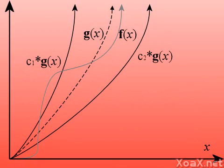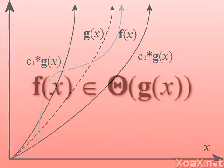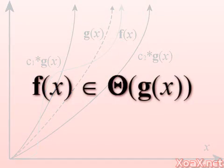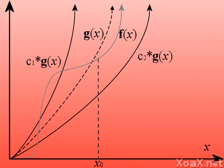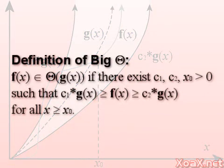If there are constants such that g(x) bounds the function f(x) both from below and above, then we say that f(x) is in Big Theta of g(x). Of course, the constants in this case are different, so we have labeled them c₁ and c₂ to clarify that. The x₀ that we choose can be any value that is far enough out that f(x) doesn't intersect either c₁ times g(x) or c₂ times g(x) anymore, and remains in this white area. Formally, we say that f(x) is in Big Theta of g(x) if there exist positive constants c₁, c₂, and x₀ such that c₁ times g(x) is greater than or equal to f(x), which is greater than or equal to c₂ times g(x), for all x greater than or equal to x₀.